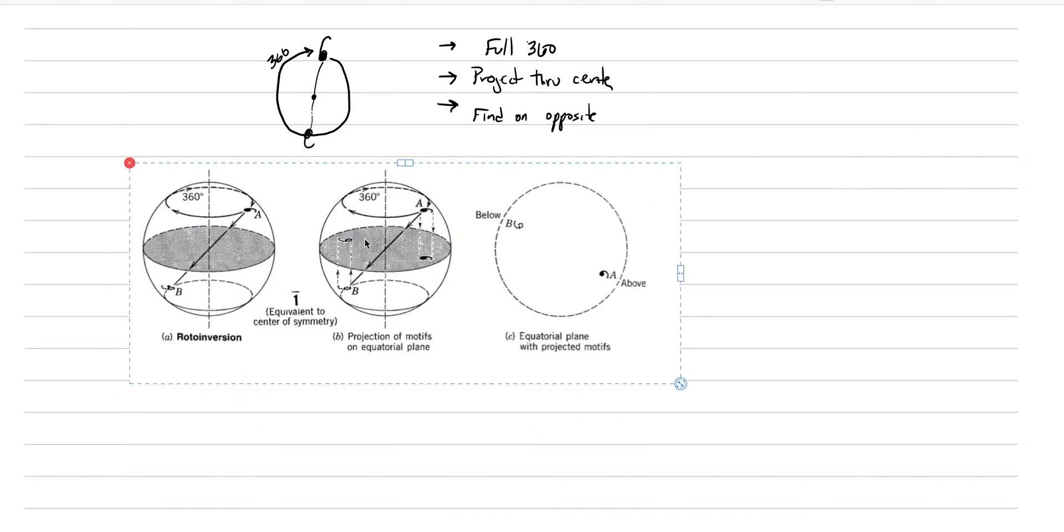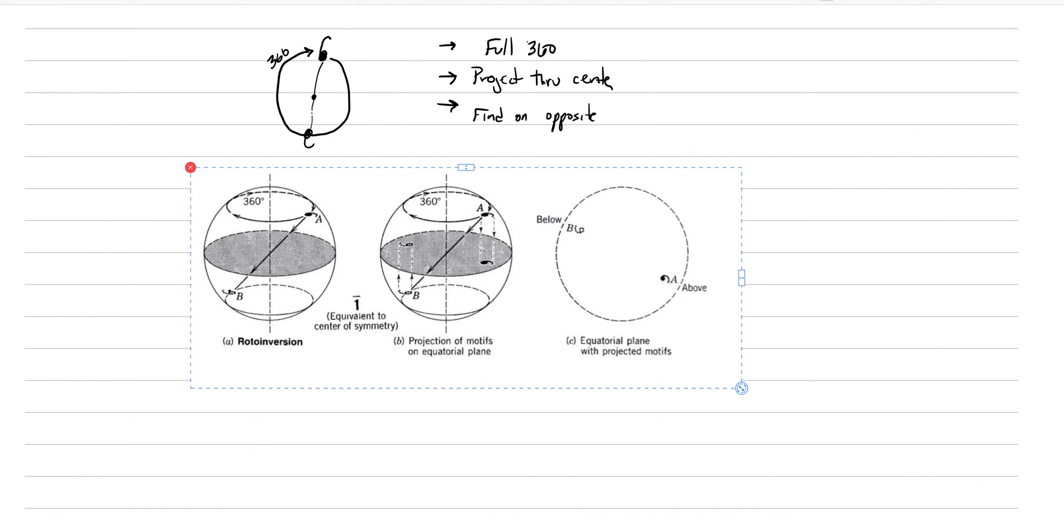Let's just show the example. It's basically this exact example here that I've drawn that is provided in the text. Here's our comma on the top. We have it in three dimensions. What do we do? We go 360 around, project down through, and there it is. We find it on the opposite side.